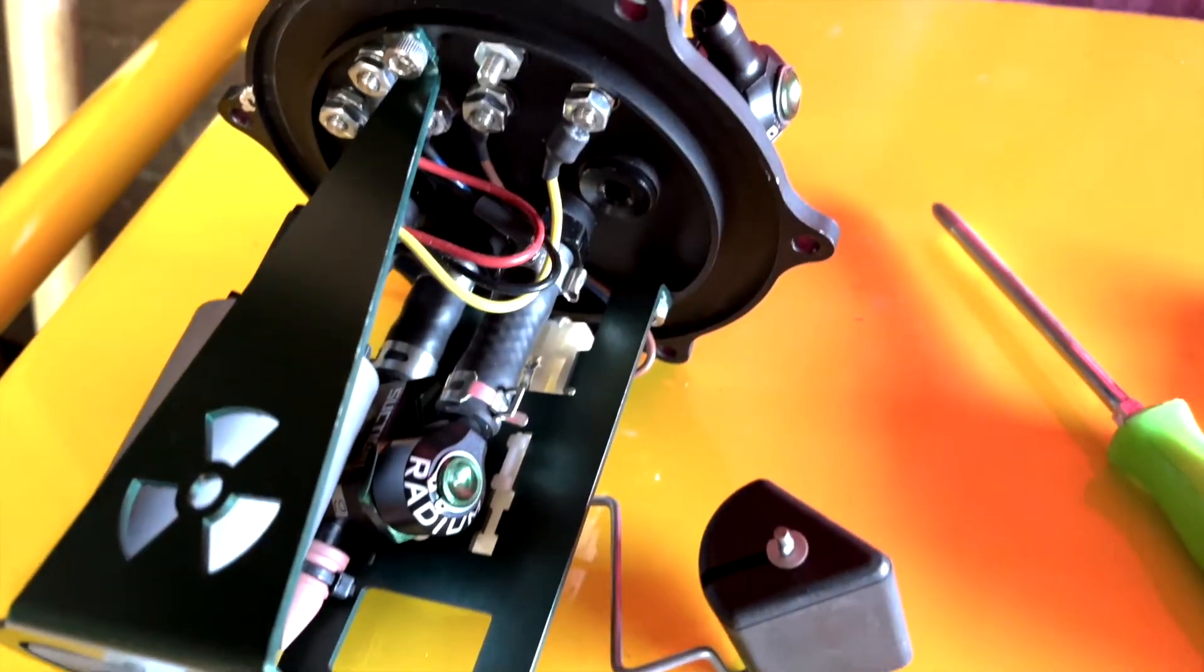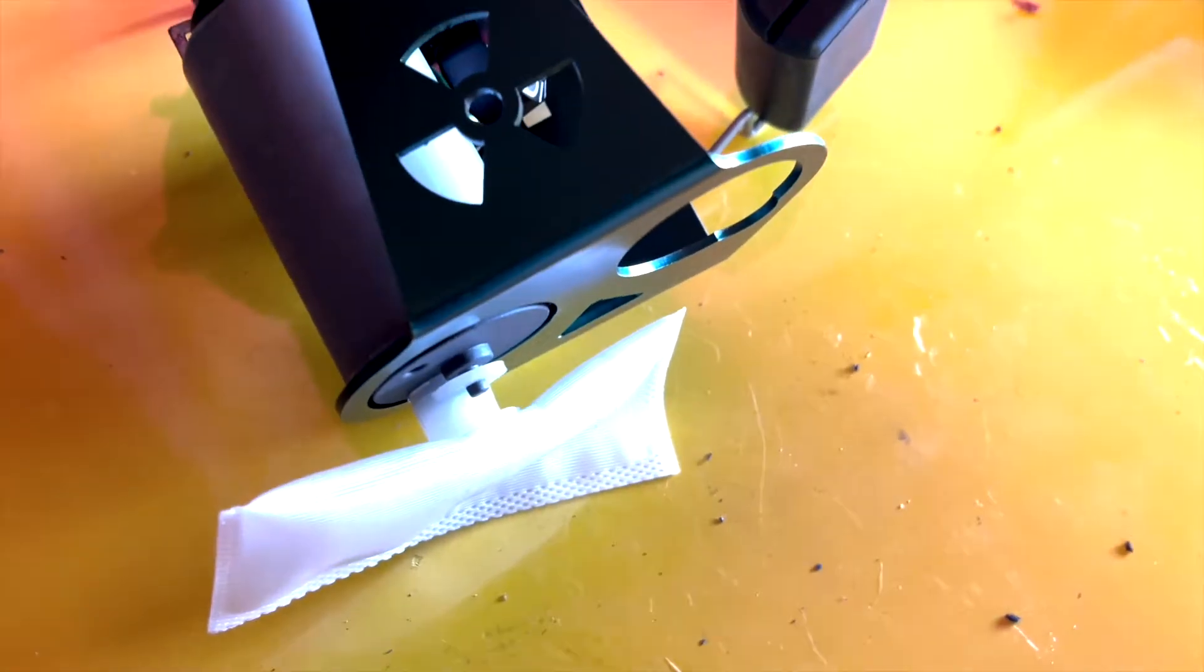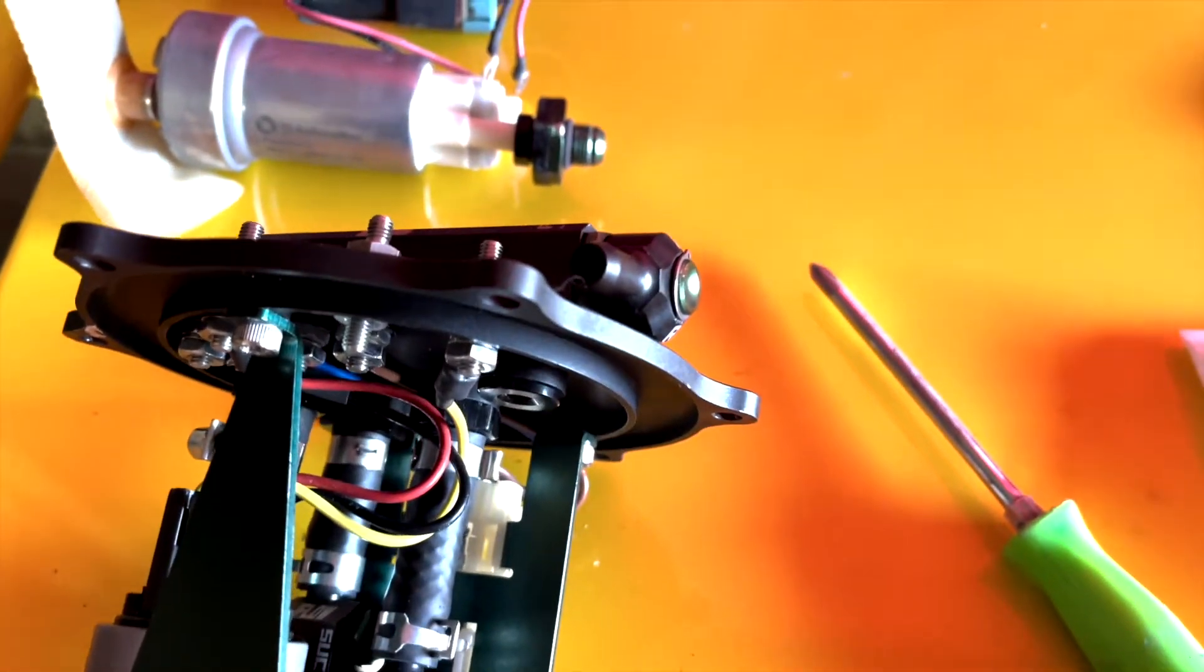Now, install your fuel level sender, and then take note of which stud has which colored wire before you install it into the vehicle. This will be important later.